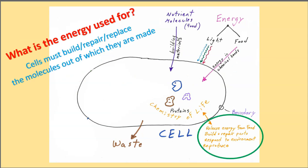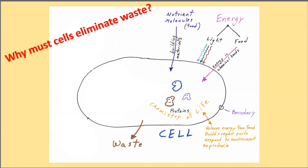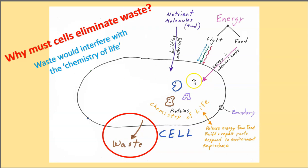What is the energy used for? Well, we're back to the chemistry of life. Building and repairing and replacing the molecules out of which cells are made. Why must cells eliminate waste? Because waste would interfere with the chemistry of life. So there's a whole lot of chemistry going on here that will produce waste materials. And if that waste material builds up, it actually starts to slow down the forward chemical reactions. And the chemistry of life would stop.